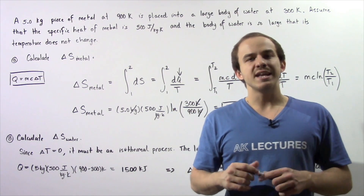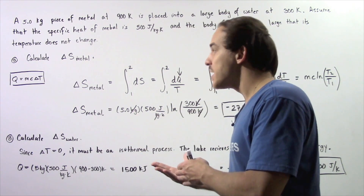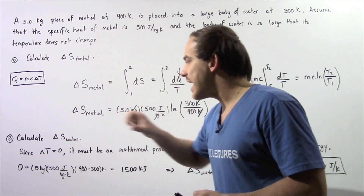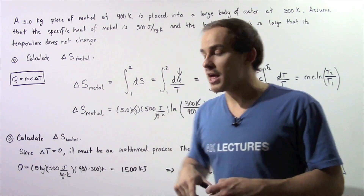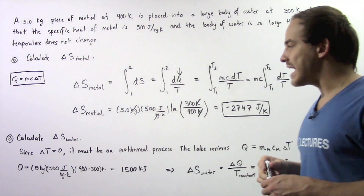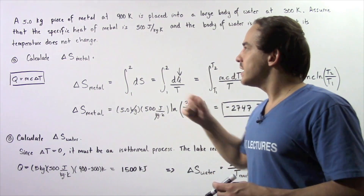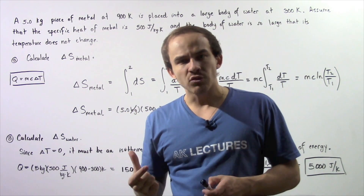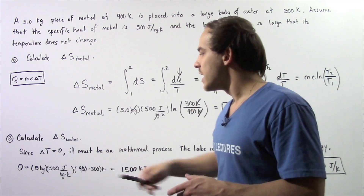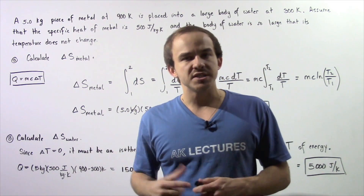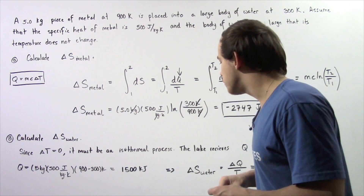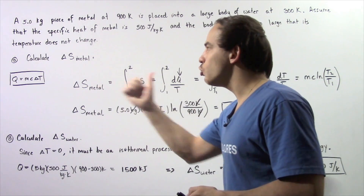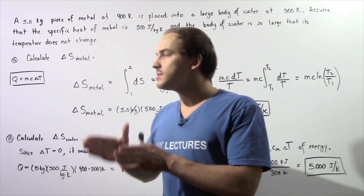By the second law of thermodynamics, the entropy of the system plus surroundings should increase. This implies the change in entropy of the water should be greater than this quantity — let's verify that. Because we assume the body of water is very large, the change in temperature is zero when we place the metal inside. Since the change in T is zero, this must be an isothermal reversible process.